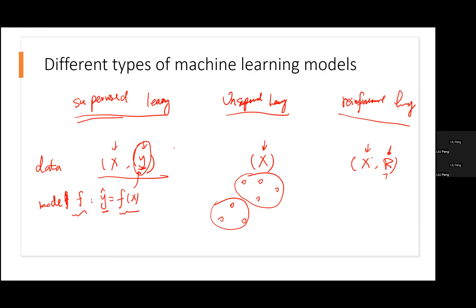We are still trying to build a model F. With F, based on what we look at, we can predict the next action. In this case, the output is an action — the action the self-driving car will take: to turn left, turn right, or go straight. That's the overall setup.